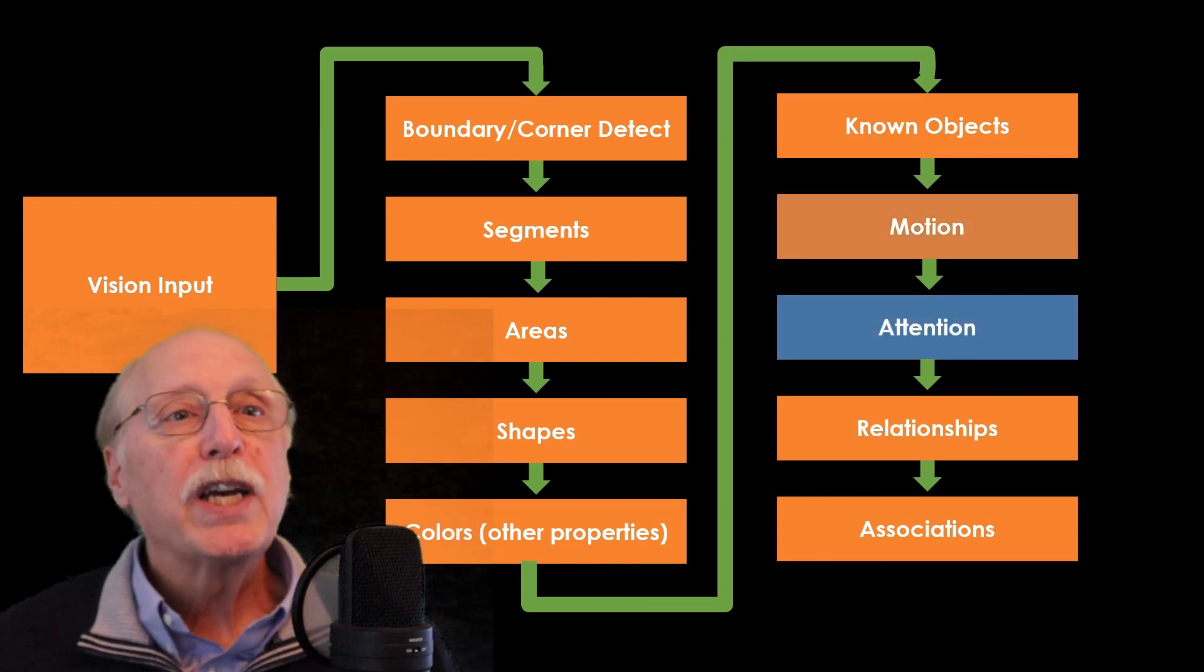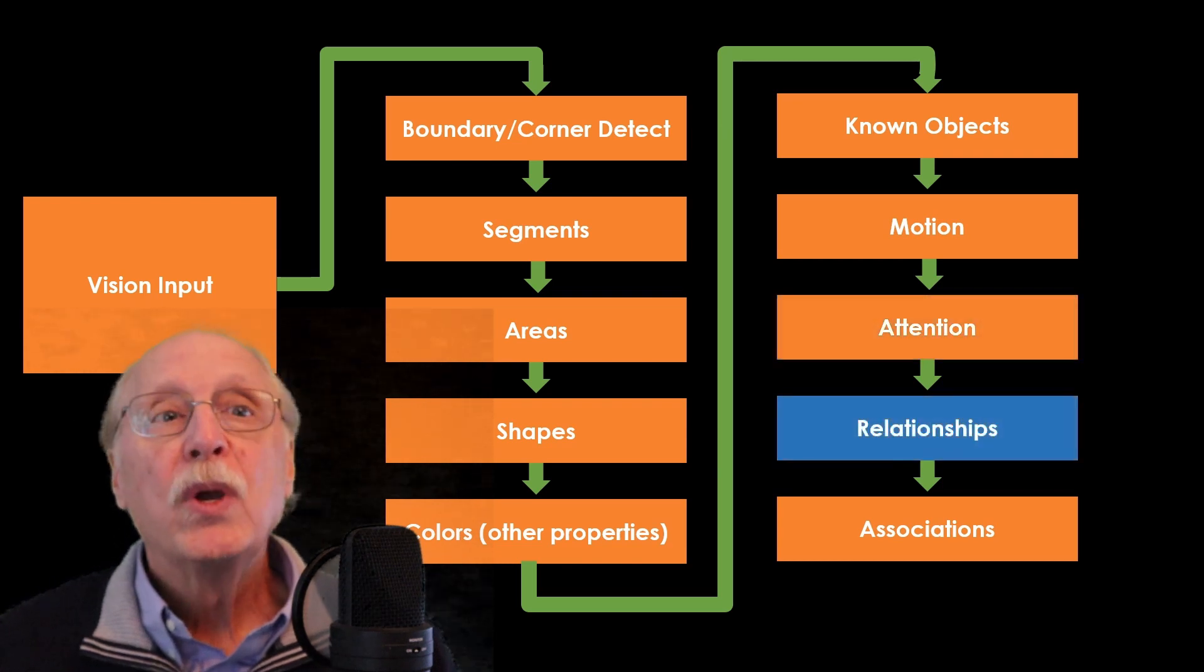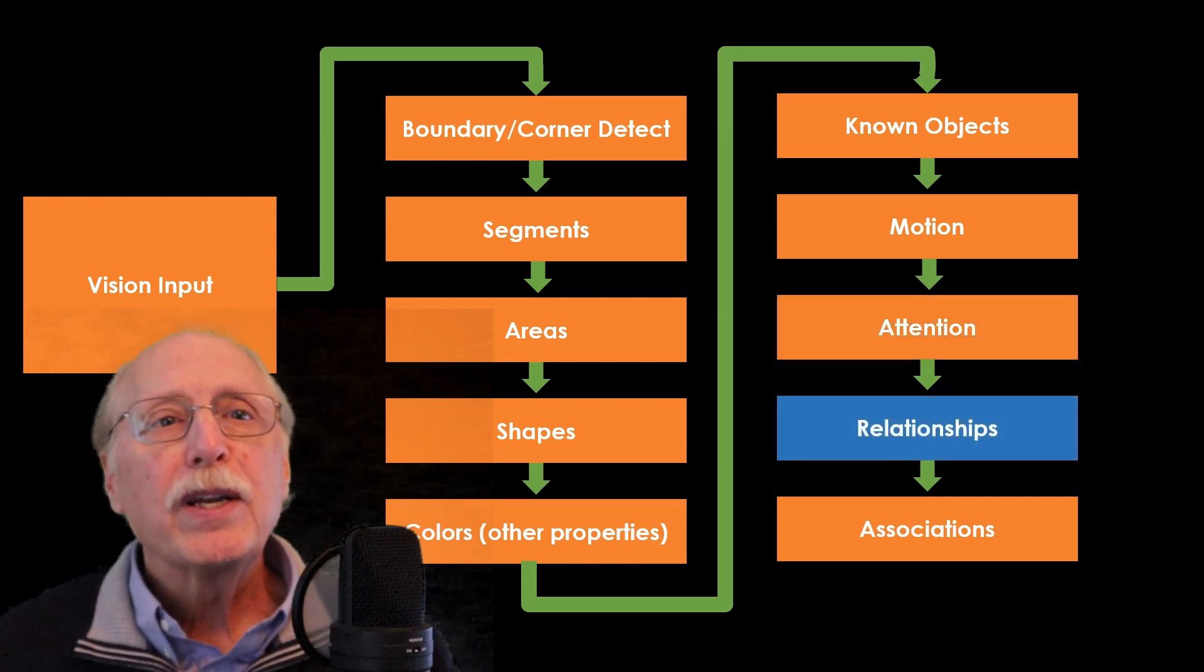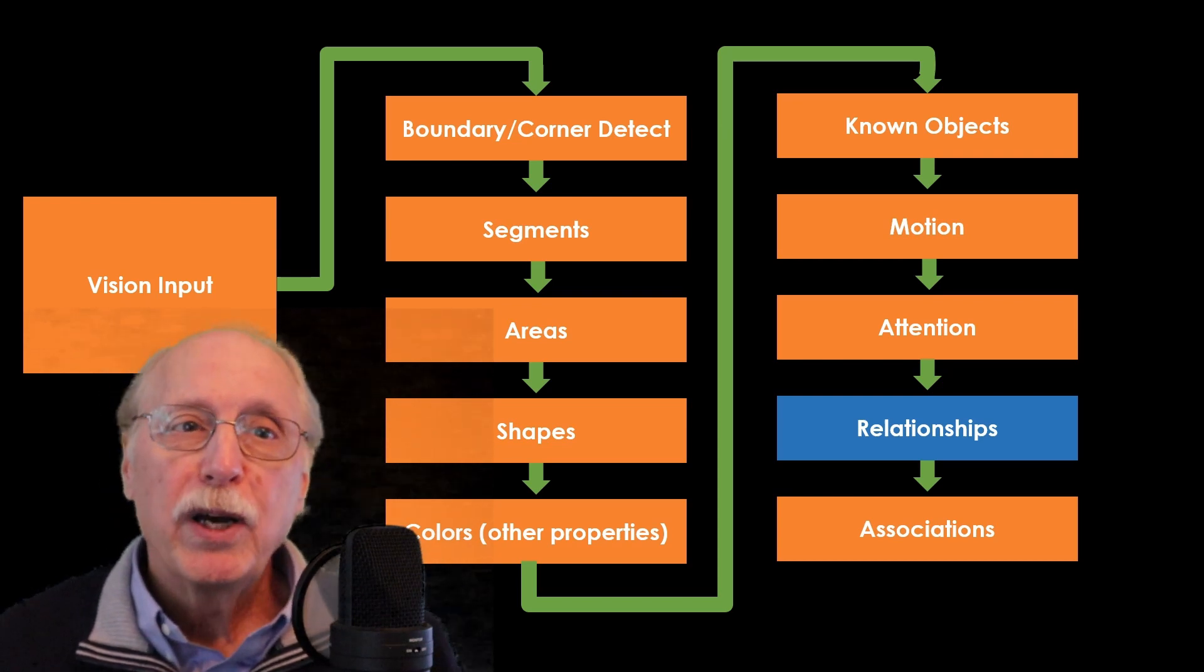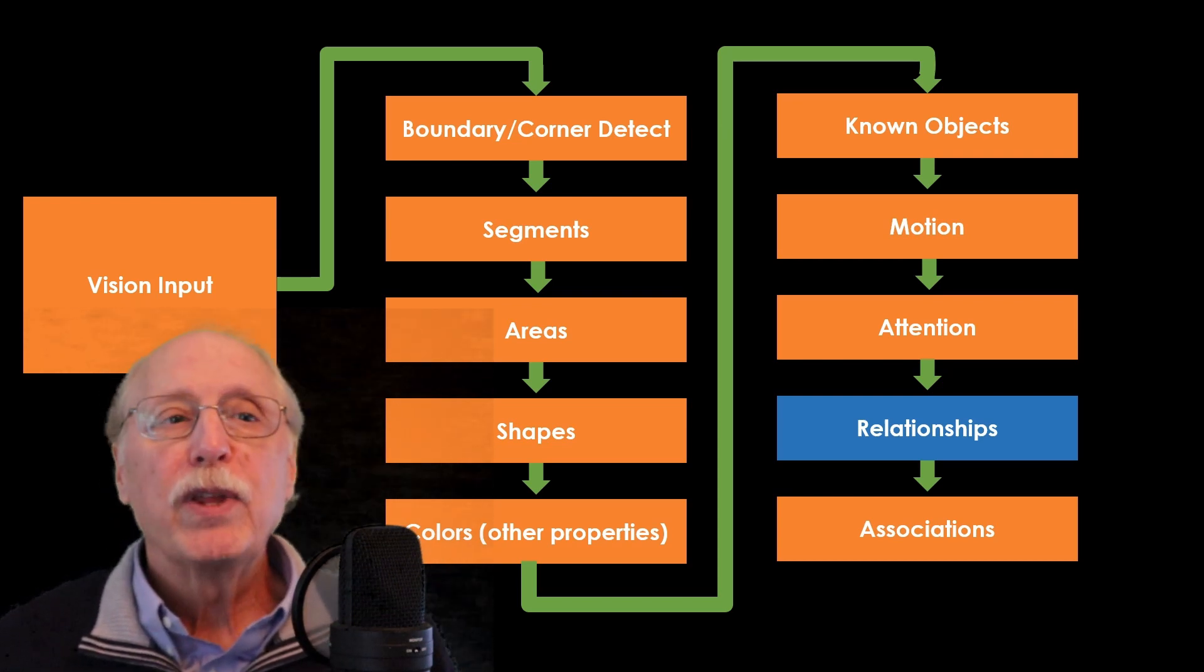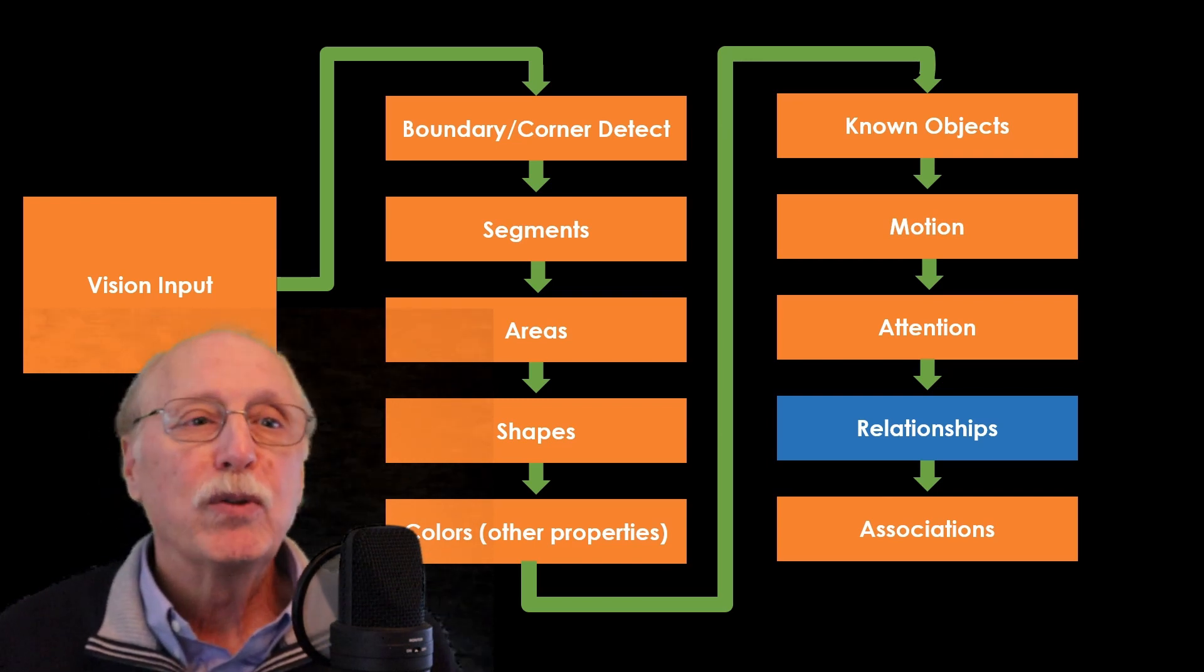The attention module decides which things to pay attention to. More important than an object's properties are their relationships to other objects. You know where things are in relationships to other things, not in terms of any absolute coordinates.